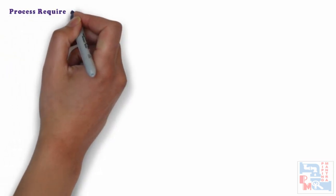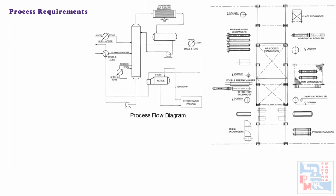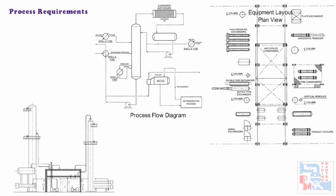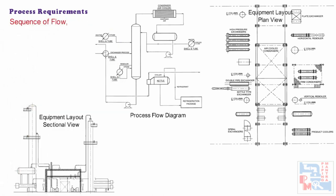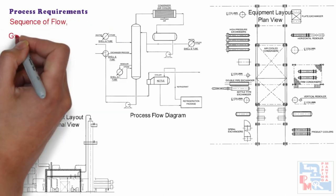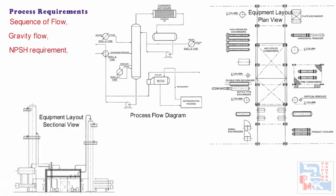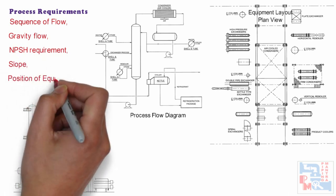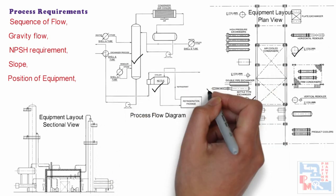Now let's have a look at the process requirements. You can see on your screens the process flow diagram, Equipment Layout plan view, and Equipment Layout sectional view. While developing an Equipment Layout, we have to think about the sequence of flow as per the process flow diagram, gravity flow wherever required, NPSH requirement as per pump calculation, slope for all the process lines, and relation of one equipment location with another, i.e. fixation of reboiler with respect to column, etc.